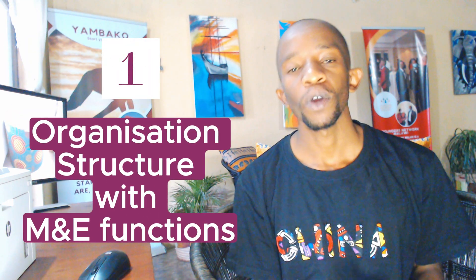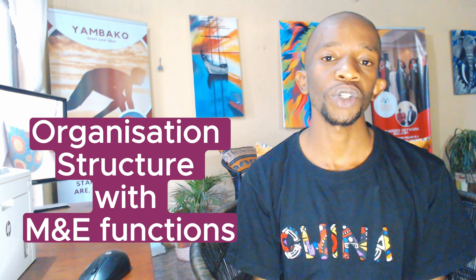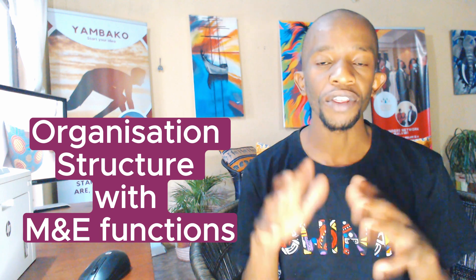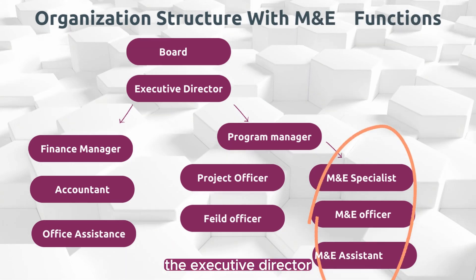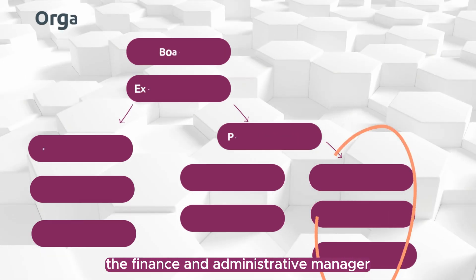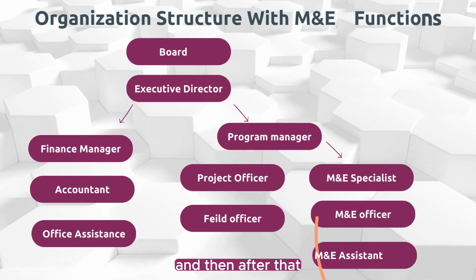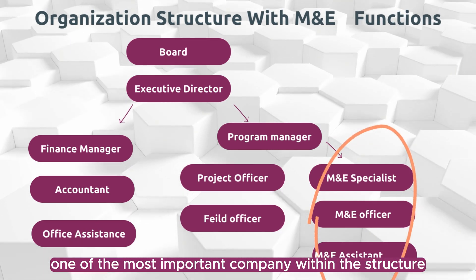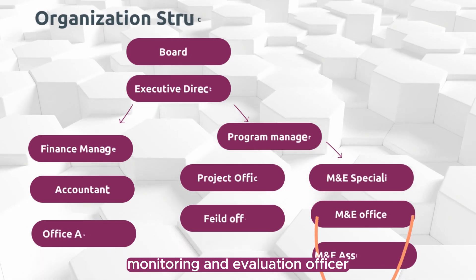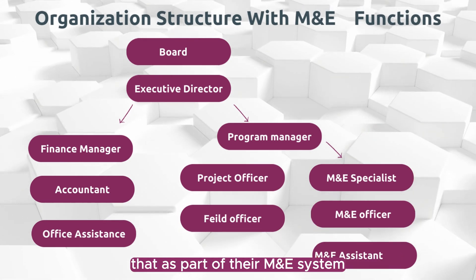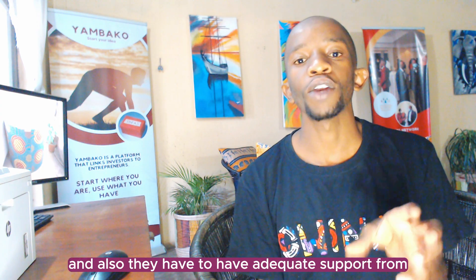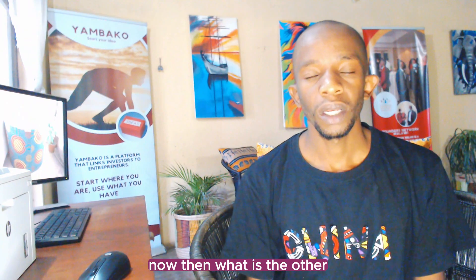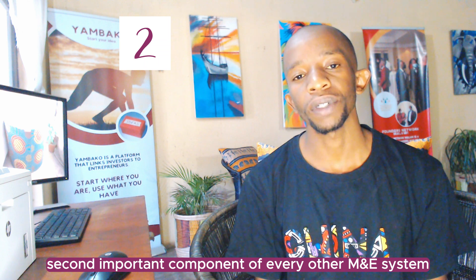The number one important component of every M&E system is the organizational structure with M&E functions. Each organization is supposed to have M&E people within the organization structure. For instance, in most NGOs you would have the executive director, the program manager, the finance and administrative manager, project officers, and critically, a monitoring and evaluation officer. The roles of M&E people have to be properly defined and they have to have adequate support from upper hierarchy.